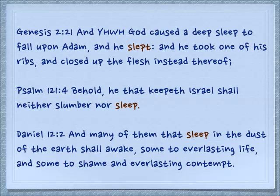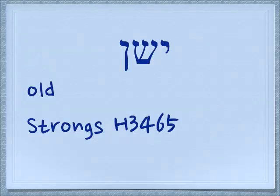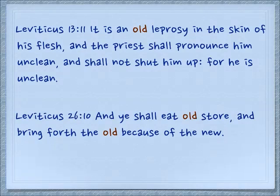In Daniel 12:2 — 'And many of them that sleep in the dust of the earth shall awake, some to everlasting life and some to shame and everlasting contempt.' Yashen is also an adjective meaning old. If you were thinking that the word for old is zaken — zaken is only used for people, and Yashen is used for things. Leviticus 13:11 — 'It is an old leprosy in the skin of his flesh, and the priest shall pronounce him unclean.' Leviticus 26:10 — 'And you shall eat the old store and bring forth the old because of the new.'